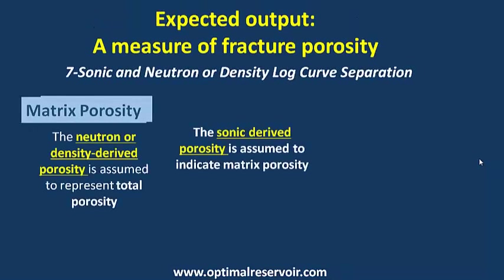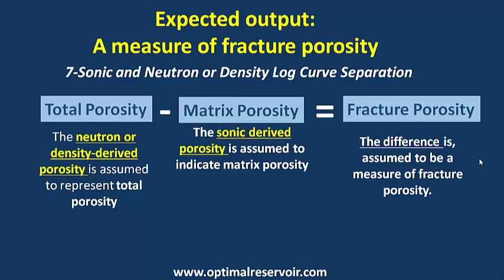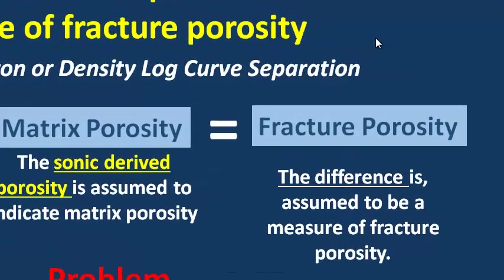The last comparison is sonic and neutron or density log curve separation. The neutron or density-derived porosity is assumed to represent total porosity, while the sonic-derived porosity is assumed to indicate matrix porosity. The difference is assumed to be a measure of fracture porosity. A problem with this technique is that fracture porosity derived using this method can in some cases be unreasonably large.